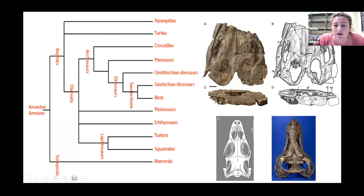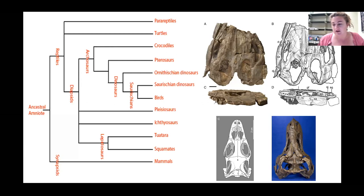You've got these two openings at the bottom of the skull called the supratemporal fenestra, and here we have the orbits. Ichthyosaurs are actually more closely related to lizards and snakes than to dinosaurs, pterosaurs, and crocodiles, which you can see in their anatomy.